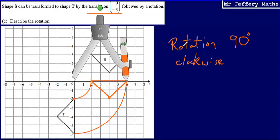And so what we can say is that this is a rotation 90 degrees clockwise. And then the centre is 0, 0.